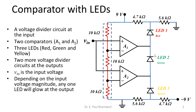There are two comparators, A1 and A2. There are three LEDs: red, green, and yellow. There are two more voltage divider circuits at the output formed from resistors 4.7kΩ and 5.6kΩ, and one more voltage divider circuit formed from 5.6kΩ and 4.7kΩ. VIN is the input voltage. Depending upon the voltage magnitude at the input, any one LED will glow at a particular point of time.